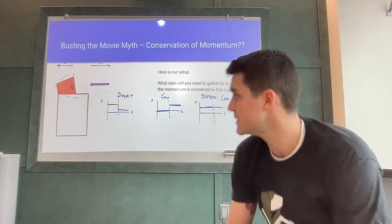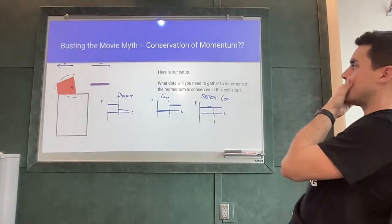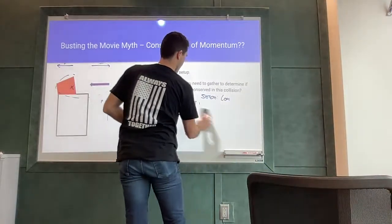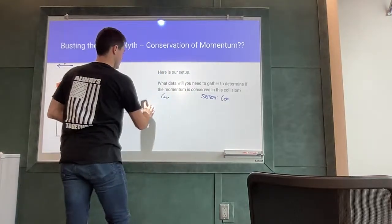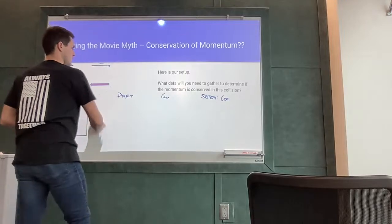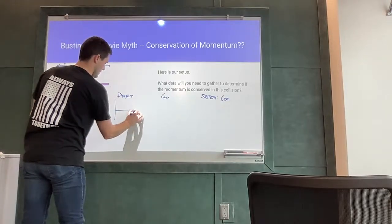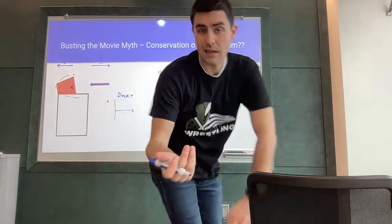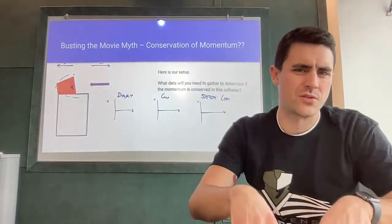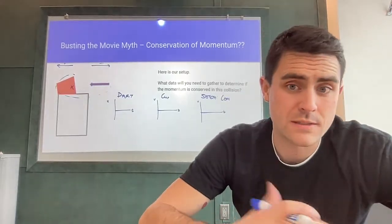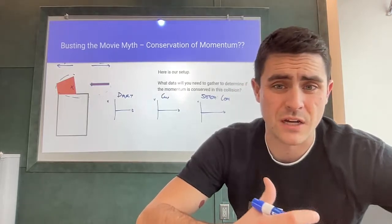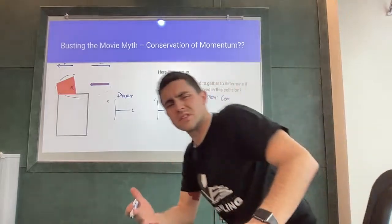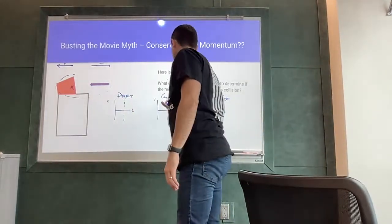So those are the momentum graphs for the three-object system. Now let's think about some different graphs - what if we do velocity-time graphs instead? How would these look different if these were velocity versus time graphs?